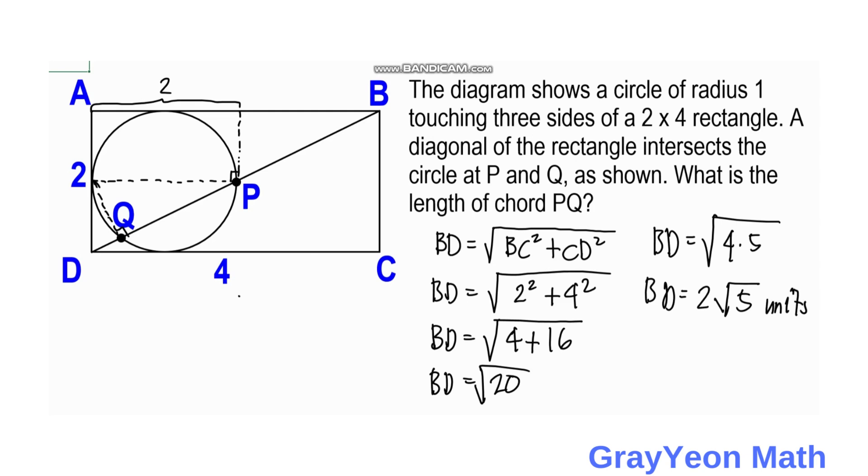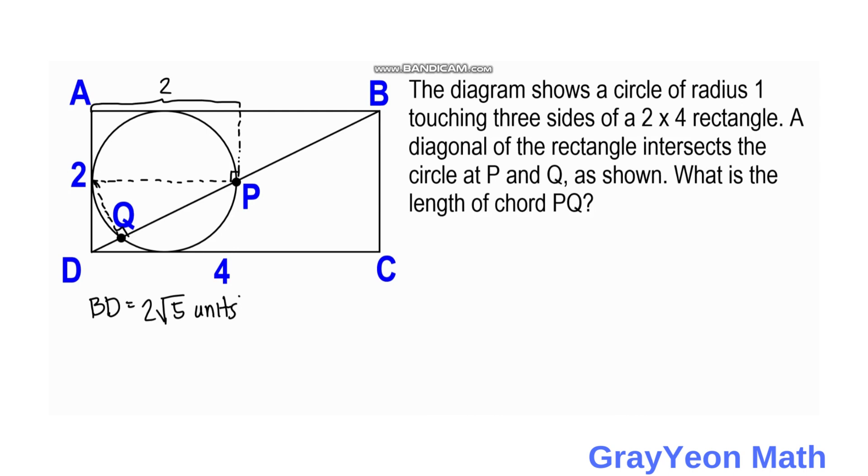Next we get the ratio of this larger right triangle BDC. So if BC is equal to 2, and CD is equal to 4, so the hypotenuse is, as we have calculated earlier, 2 root 5. And if we try to divide this by 2, we have 1 is to 2 is to root 5. This is actually the ratio of the right triangle sides.